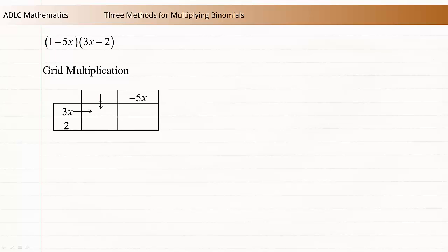One cell at a time, multiply the terms. 1 times 3x is equal to 3x. Negative 5x times 3x is equal to negative 15x squared. 1 times 2 is 2. Negative 5x times 2 is negative 10x.